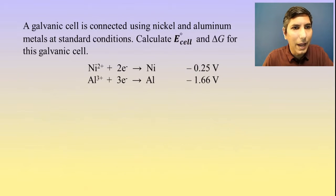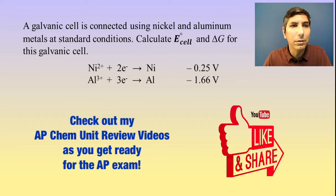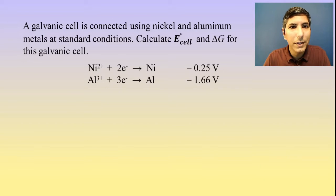Let's take a look at this example problem. A galvanic cell is connected using nickel and aluminum metals at standard conditions. Calculate the overall E cell, the cell potential, and delta G for this galvanic cell.